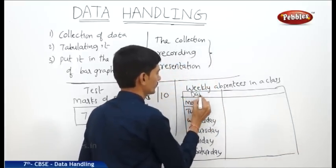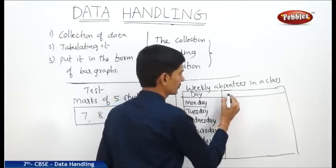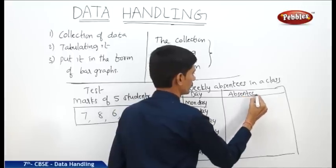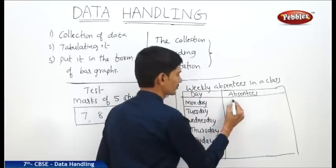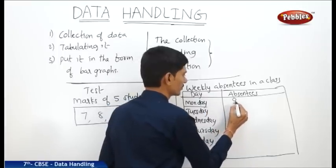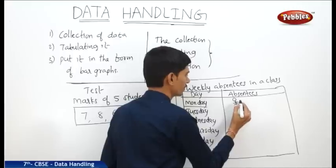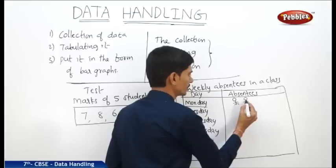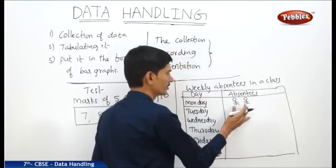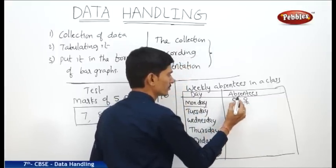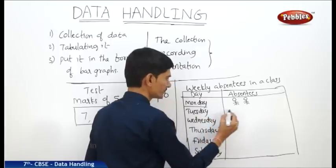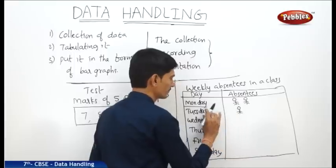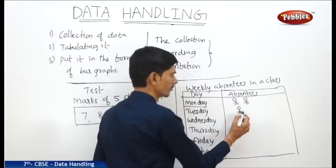Here the first column is day, in the second column absentees. Now in the second column, Monday, there are 2 students absent in the class, so we represent it by 2 student figures. And Tuesday, only 1 student is absent, so we will show the absentees of Tuesday by 1 student figure.